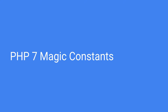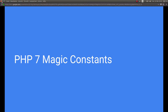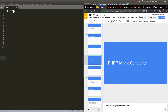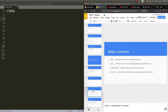Hello everyone. In this tutorial we are going to talk about magic constants. If you followed my last tutorial, I showed you how to declare regular constants, and now I will show you some cool stuff with magic constants, which means that these constants are already declared by PHP and with those you can print out different interesting information.